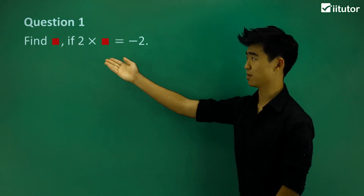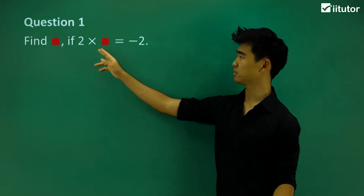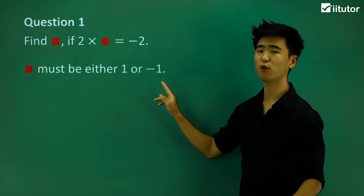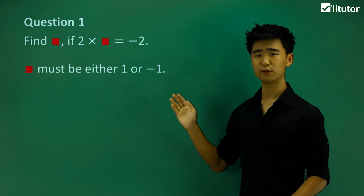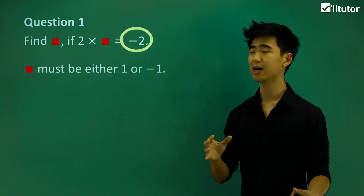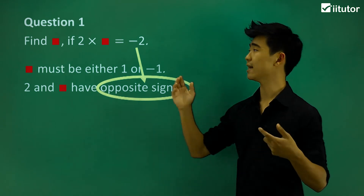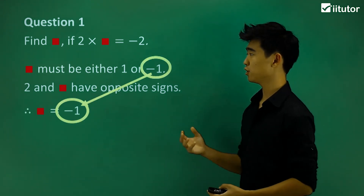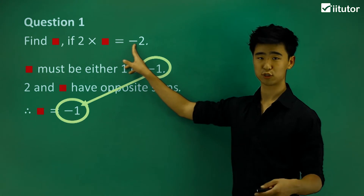Question number one: find the red box if two times that red box equals negative two. If we just look at the numbers, the red box should be positive one or negative one. Now the outcome is negative two, so the two signs multiplied together should be opposite in sign. So the red box should be negative one — two numbers have to be opposite in sign to give me that negative result.